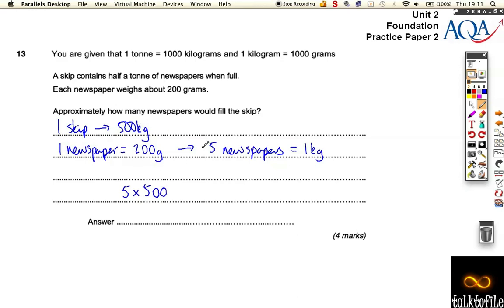So for every kilogram, we can get five newspapers. So 5 times 500 is 25 with two zeros on the end, so we can get 2,500 newspapers in a skip.